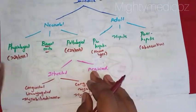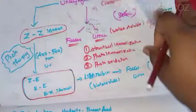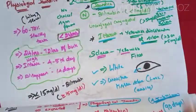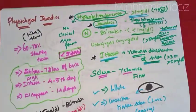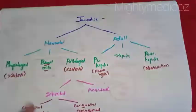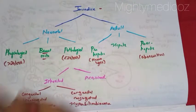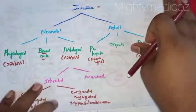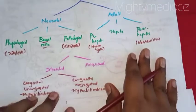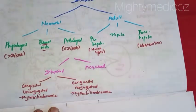We have discussed Physiological Jaundice in previous lecture videos. Those who want to know about Physiological Jaundice can go to the description or the info button. For Pathological Jaundice, we are dividing it into Inherited and Acquired.